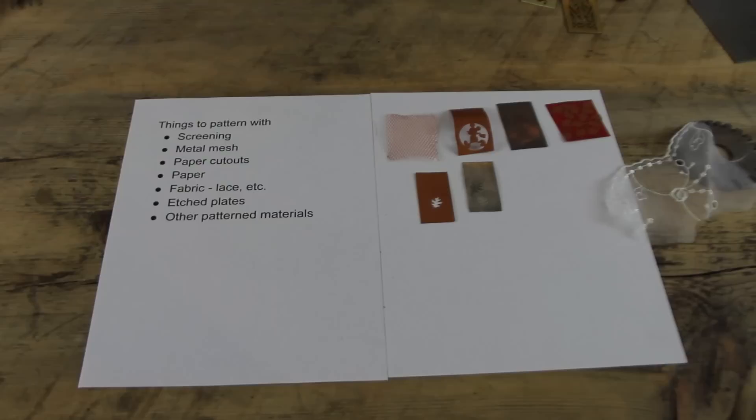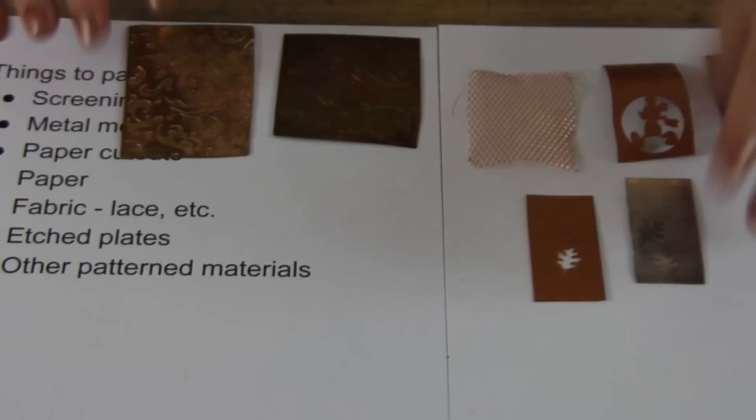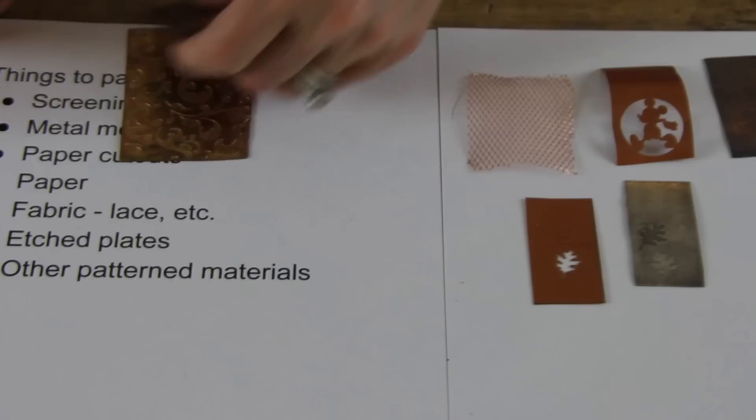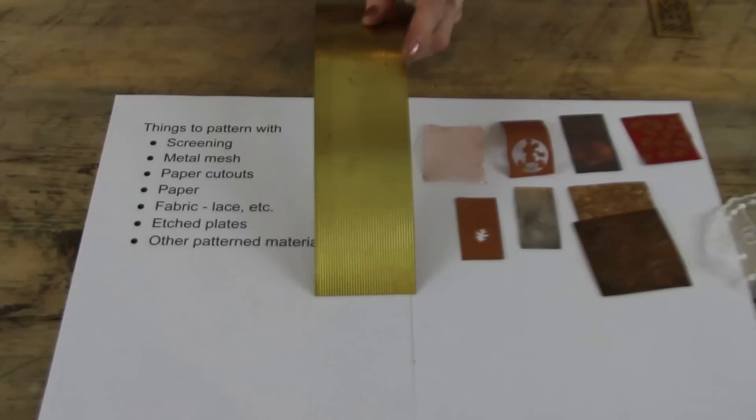And then, etched plates is another thing I love to do. This is a positive and a negative plate. This is dented in. So the metal will be popping up when you roll it through. This one will be sunken in. So it changes the appearance of it. These are great to make on your own because you can have unique patterns that nobody else has out there.